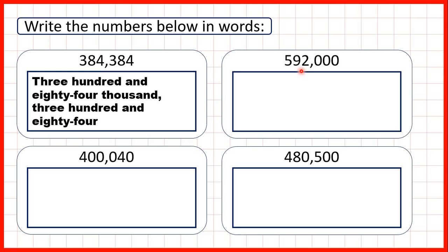Now here again, we just read the number up to the comma and we have 592. So that's five hundred and ninety-two thousand. Then after the comma,